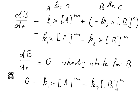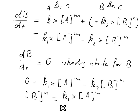And in this case we can say the steady state concentration B to the power of N equals, we just solve this equation here for B to the power of N, equals k1 times A to the power of M divided by k2. And that is our steady state concentration.